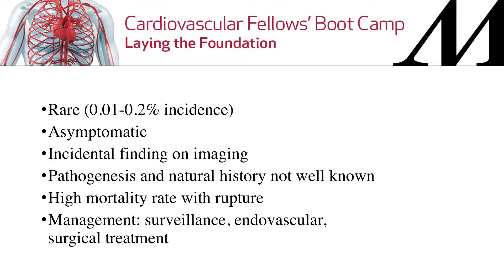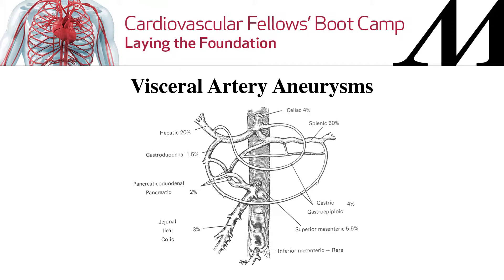Management of visceral artery aneurysm is like most things in vascular surgery: surveillance if they're small; endovascular options and surgical options are both pretty much comparable. The most common type is splenic artery aneurysm, 60% of the time. The second most common involves the hepatic artery, then celiac, and then the other smaller arteries.